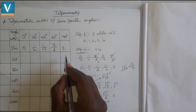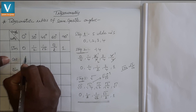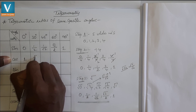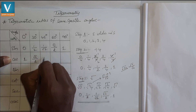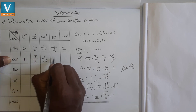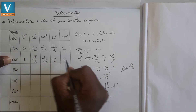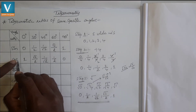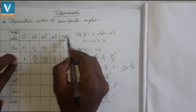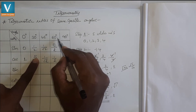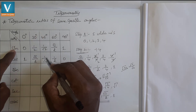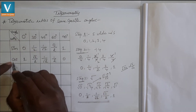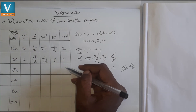To get the cosine values, I am writing the sine values in reverse order. So: cos 0° = 1, cos 30° = √3/2, cos 45° = 1/√2, cos 60° = 1/2, cos 90° = 0. This means cos 0° = sin 90°, cos 30° = sin 60°, cos 45° = sin 45°, cos 60° = sin 30°, and cos 90° = sin 0°.